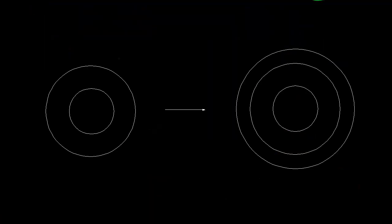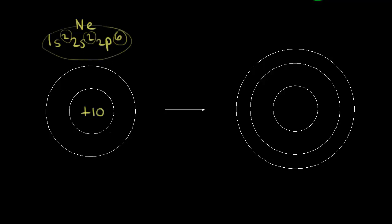Electron affinities don't have to be negative. For some atoms, there's actually no attraction for an extra electron. Let's take neon, for example. Neon has an electron configuration of 1s2, 2s2, and 2p6, so there's a total of 10 electrons and a positive 10 charge in the nucleus for a neutral neon atom. So let's say this is our nucleus here with a positive 10 charge, 10 protons, and then we have our 10 electrons surrounding our nucleus. If we try to add an electron, we still have our 10 protons in the nucleus.